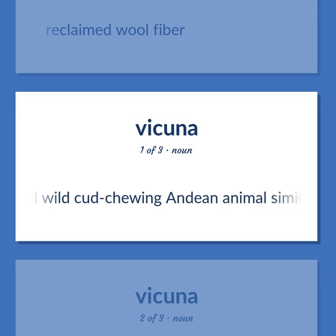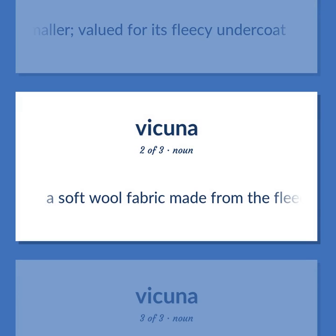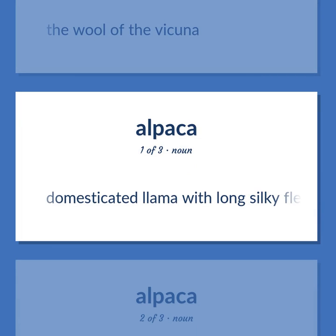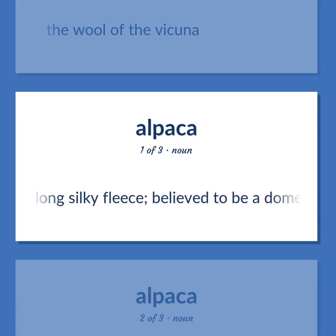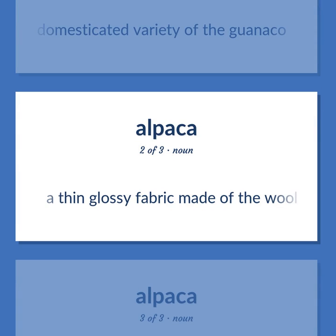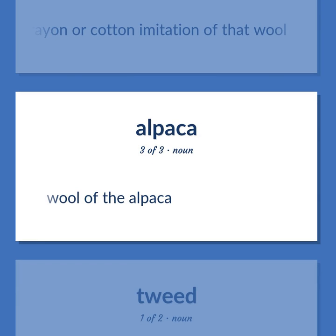Vicuña: a small wild cud-chewing Andean animal similar to the guanaco but smaller, valued for its fleecy undercoat. A soft wool fabric made from the fleece of the vicuña; the wool of the vicuña. Alpaca: domesticated llama with long silky fleece, believed to be a domesticated variety of the guanaco. A thin glossy fabric made of the wool of the alpaca, or made of a rayon or cotton imitation of that wool. Wool of the alpaca.